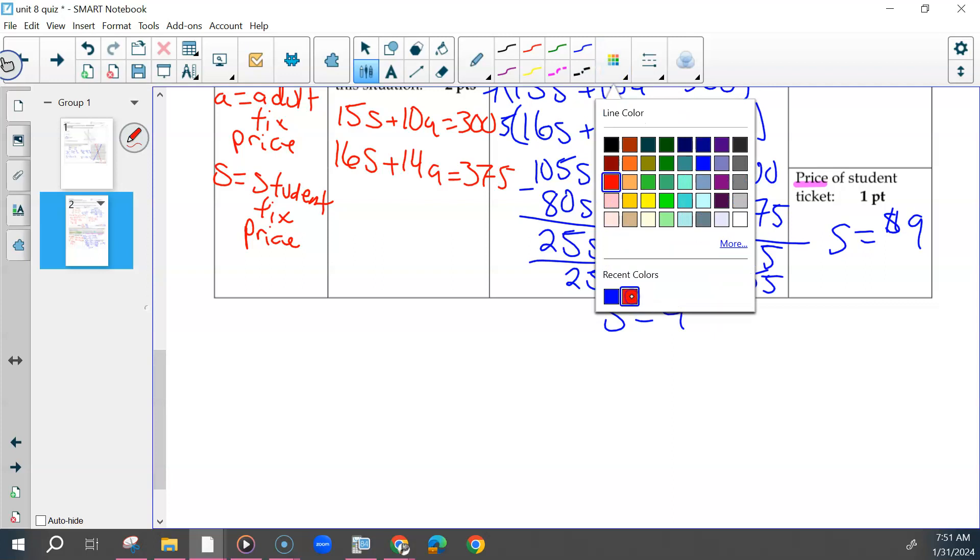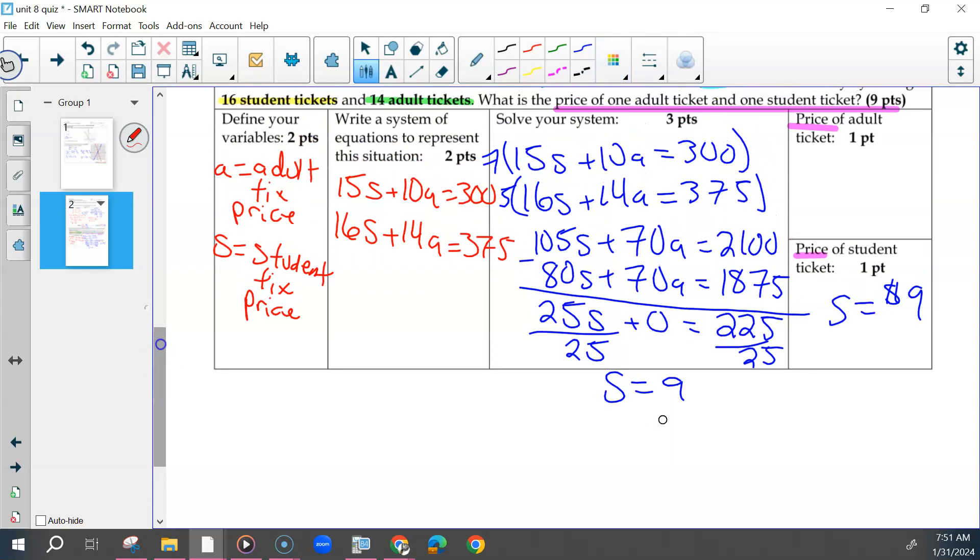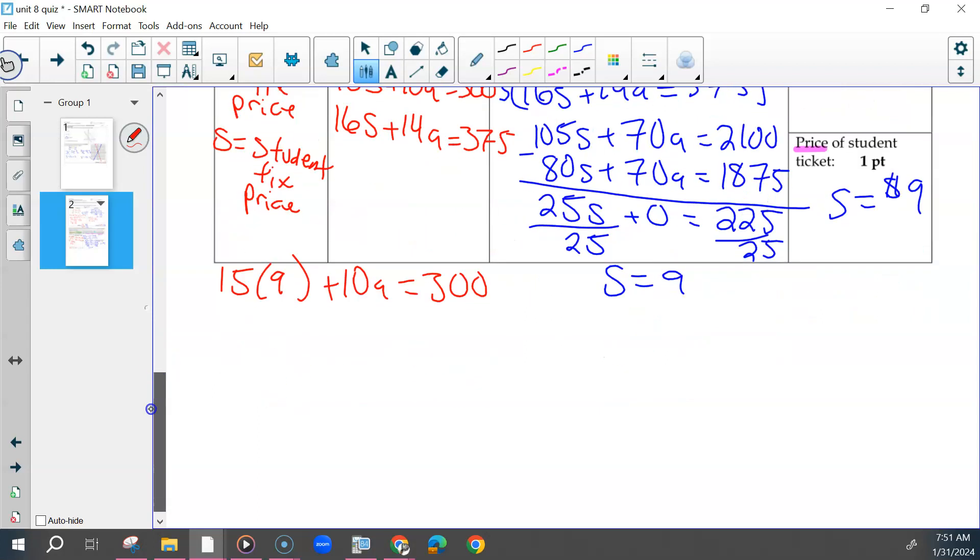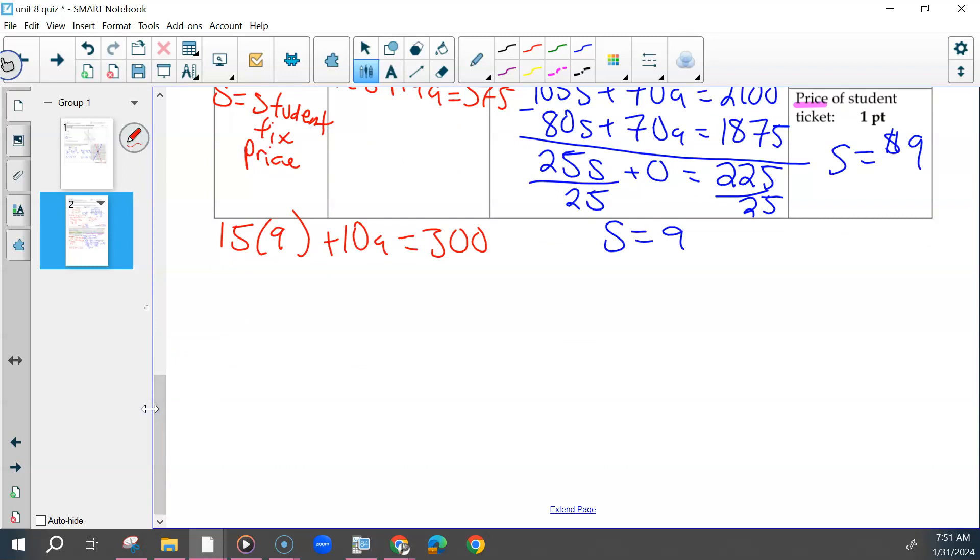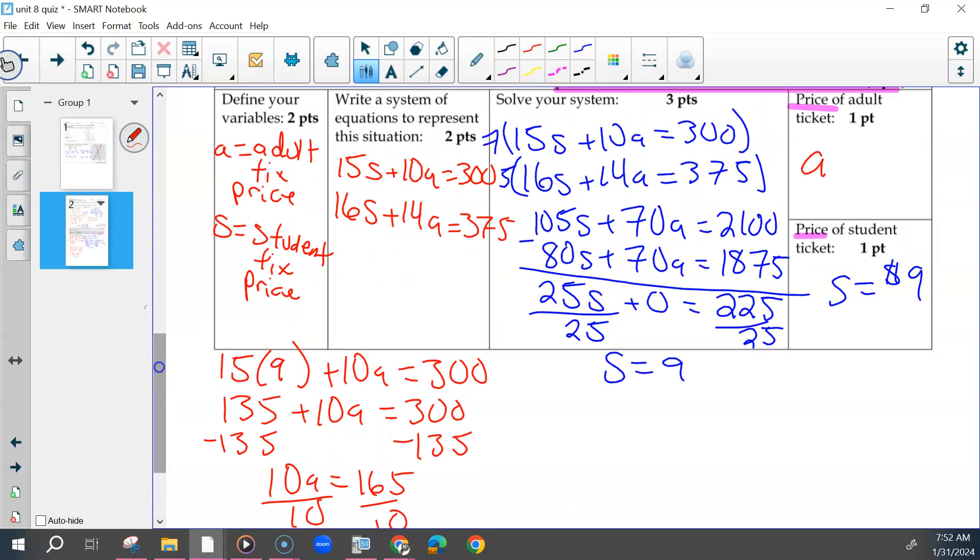And then use that, put it back into one of your equations. It does not matter which one. Most of us that got this put it back into this one, but some also use this one. 135 plus 10A equals 300. Subtract 135, we get 165, which would divide by 10 to get 16.50. So the price of an adult ticket was $16.50.